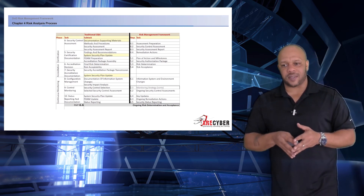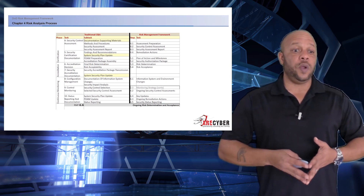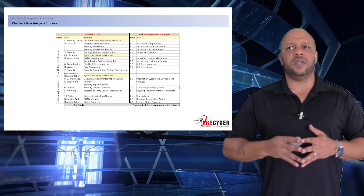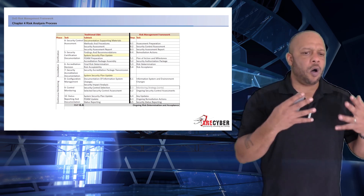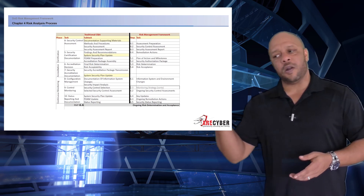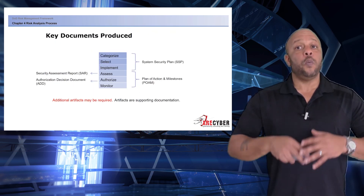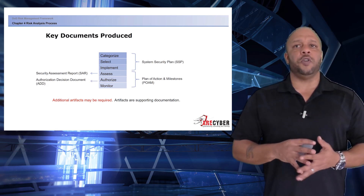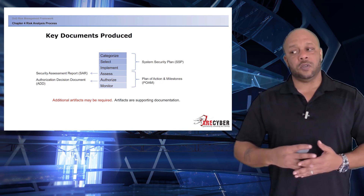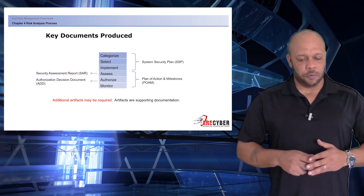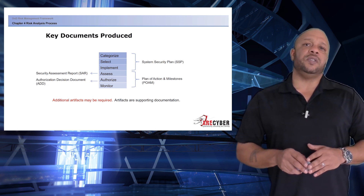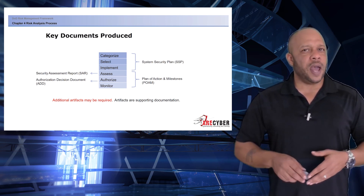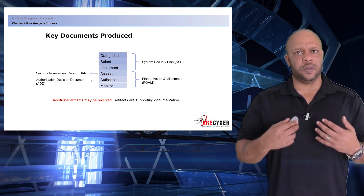When you break it down to its core processes, there's not a lot of difference between DICAP and the risk management framework — it's not a different process, just different wording. All the same requirements that were there under one are there now. The key documents needed for an RMF authorization are: the system security plan, the plan of action and milestones or POAM, the security assessment report or SAR, and the authorization decision document or ADD. That is the core — what we used to call the executive package — of a risk management framework authorization package.